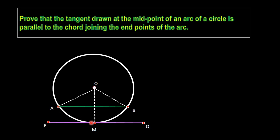Since M is the midpoint of arc AB, it separates the arc into two equal arcs AM and MB. We know that equal arcs subtend equal angles at the center. So we can say angle AOM equals angle BOM.